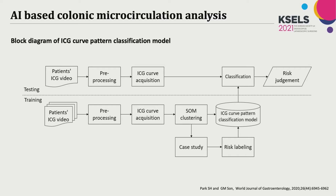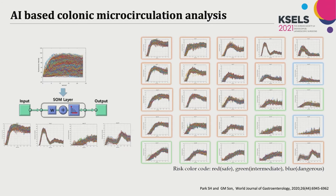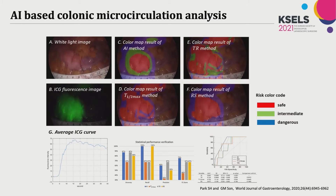This figure shows the block diagram of the ICG curve pattern classification model used in the AI program. We used a SOM (Self-Organizing Map) network for the training dataset. Using this classification model, ICG curves were categorized into 25 patterns, and risk was labeled with clinical information. This AI program can analyze ICG video and categorize ICG patterns as safe, intermediate, or dangerous within one minute in real time. When compared with conventional quantitative parameters, AI classification showed more accurate, consistent, and reliable results.